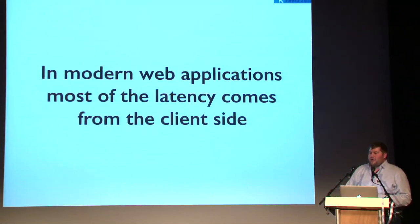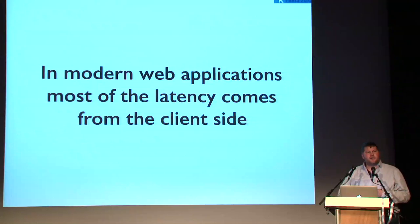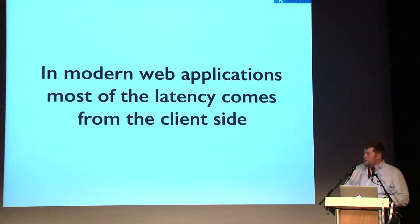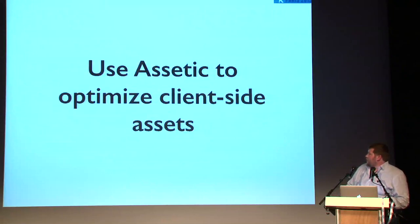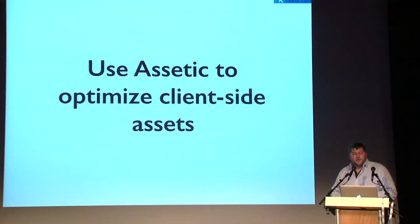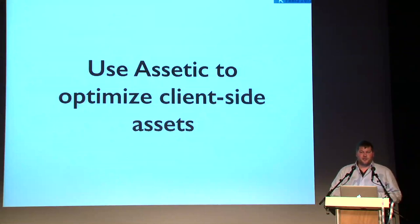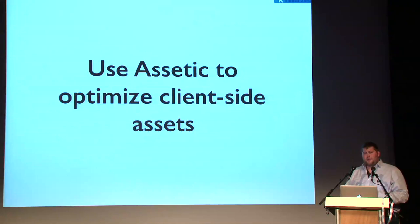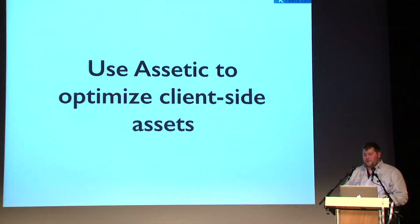Most of the latency in modern applications — especially with Angular and Ember — comes from shifting work previously done server-side to the client side, where resources aren't shared. A very easy tip is to optimize your client-side assets using a library called Assetic to combine and minify CSS and JavaScript, optimize images, and do other build-time optimizations to improve the end-user experience.